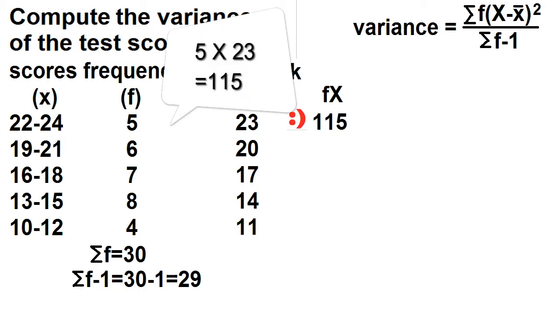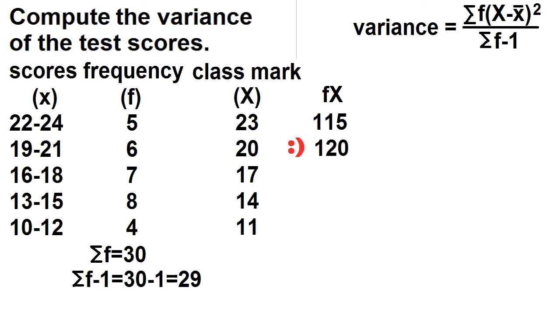5 times 23 is 115. 6 times 20 is 120. 7 times 17 is 119. 8 times 14 is 112. 4 times 11 is 44.